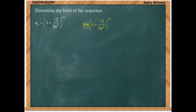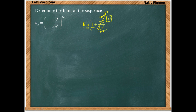As n gets large, this denominator gets large while the numerator stays constant. So this part is all going to go to zero and we have this one here, and the exponent is going to get very large as n gets large. So we are of the form one to the infinity.